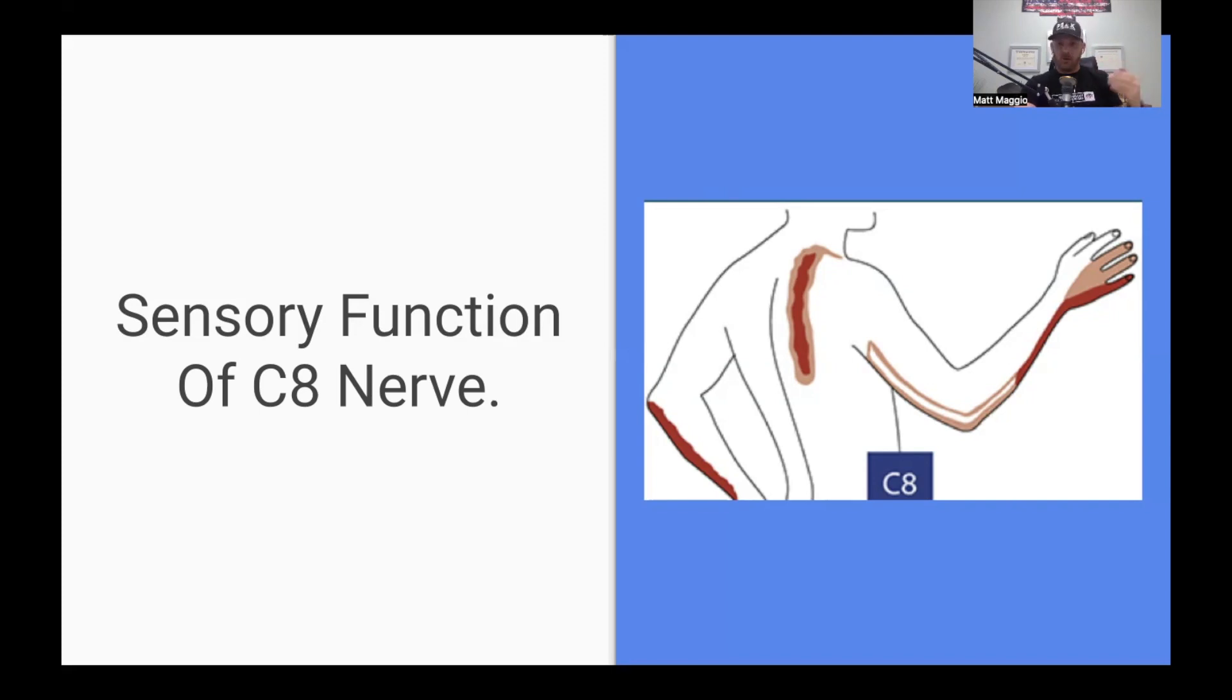The ulnar nerve actually is made up of the C8 and the T1 nerve root. And a lot of times if there's damage in the ulnar nerve, it can be affected by that nerve root as well. And that's the pattern that it typically follows. I've seen a lot of clients that come in and they have a lot of numbness and tingling right around that area into the pinky as well, and that can definitely bring to the idea that there is a C8 dysfunction in there.